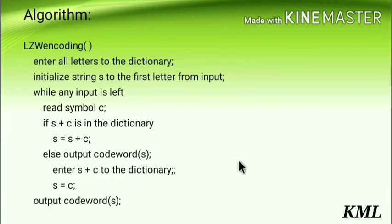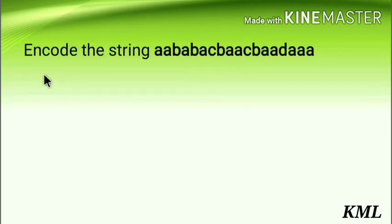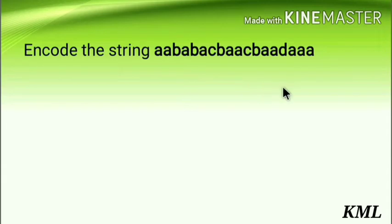This is the basic algorithm. Now let's see the problem — I'll explain with the steps while solving it. Here I have the problem: encode the string a, b, a, b, a, c, b, a, c, b, a, c, b, a, d, triple a using LZW encoding.